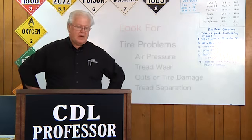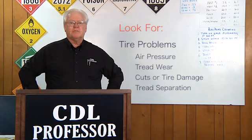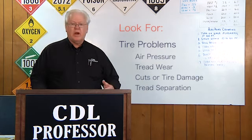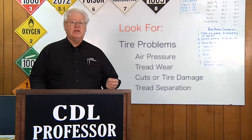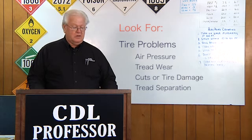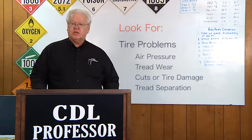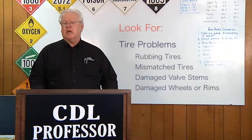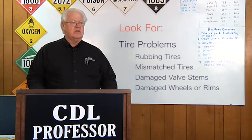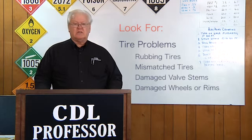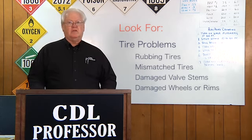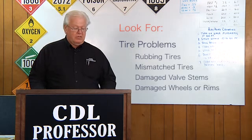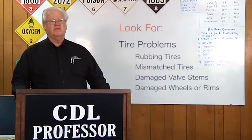What to look for on your inspection — tire problems. If you have too much or too little air pressure in the tires, that can cause a problem. Bad wear on your tires — be aware of those. You must have four thirty-seconds of an inch on your front steer tires and two thirty-seconds of an inch on the rest of your tires. Look for cuts or other damage, and tread separation. Dual tires that come in contact with each other can be dangerous because it can cause a fire. Radial and bias ply tires cannot be used together. Cut or cracked valve stems may cause leakage and flat tires. Regrooved, recapped, or retreaded tires on the front wheels of buses is prohibited.